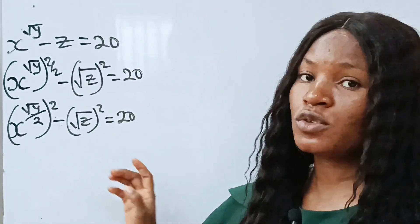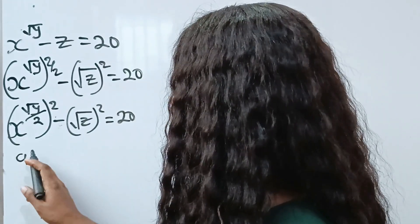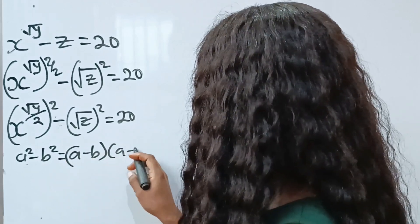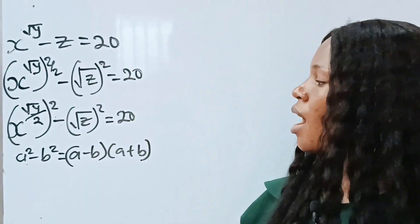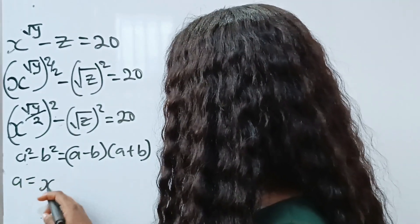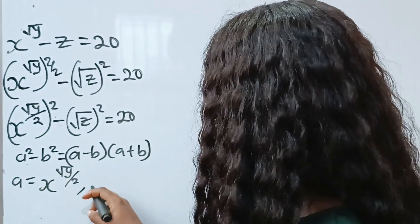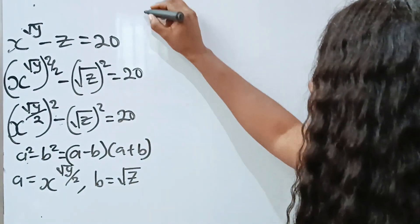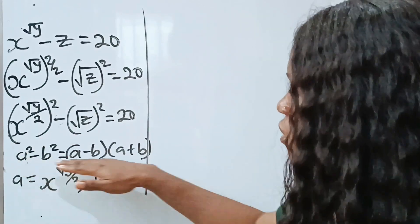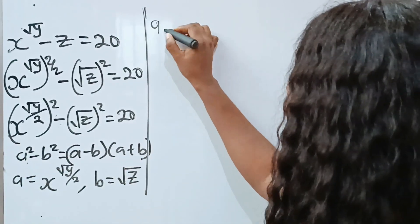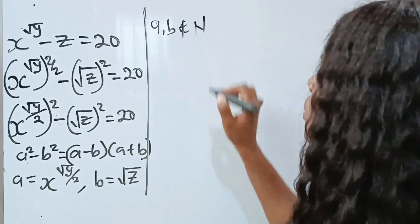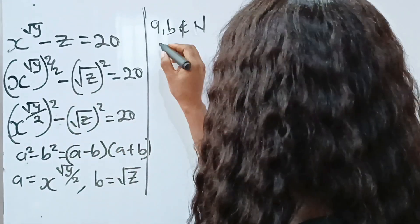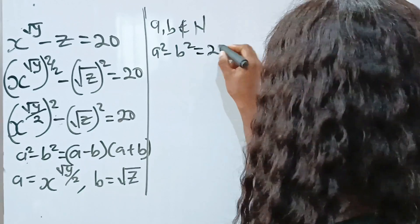This is difference of two squares. In our algebra, the identity a squared minus b squared is equal to a minus b multiplied by a plus b. Now, in this case, our a is x to the power of root y divided by 2, while our b is equal to square root of z. Note that a and b are natural numbers.